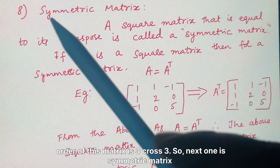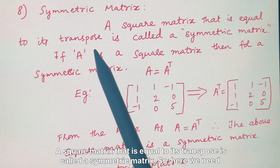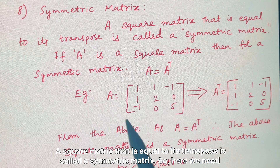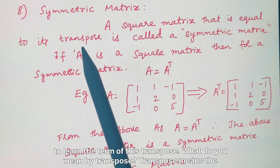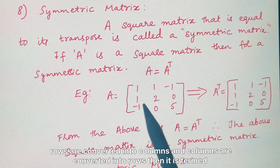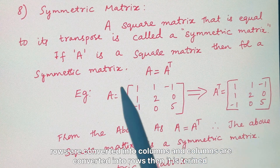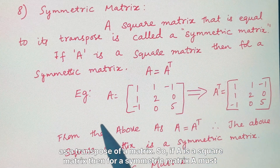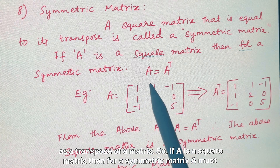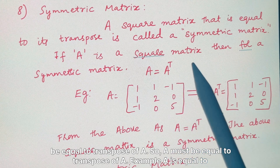The eighth type is a symmetric matrix — a square matrix that is equal to its transpose is called a symmetric matrix. Transpose means the rows are converted into columns and columns into rows. For a symmetric matrix, A must be equal to the transpose of A.